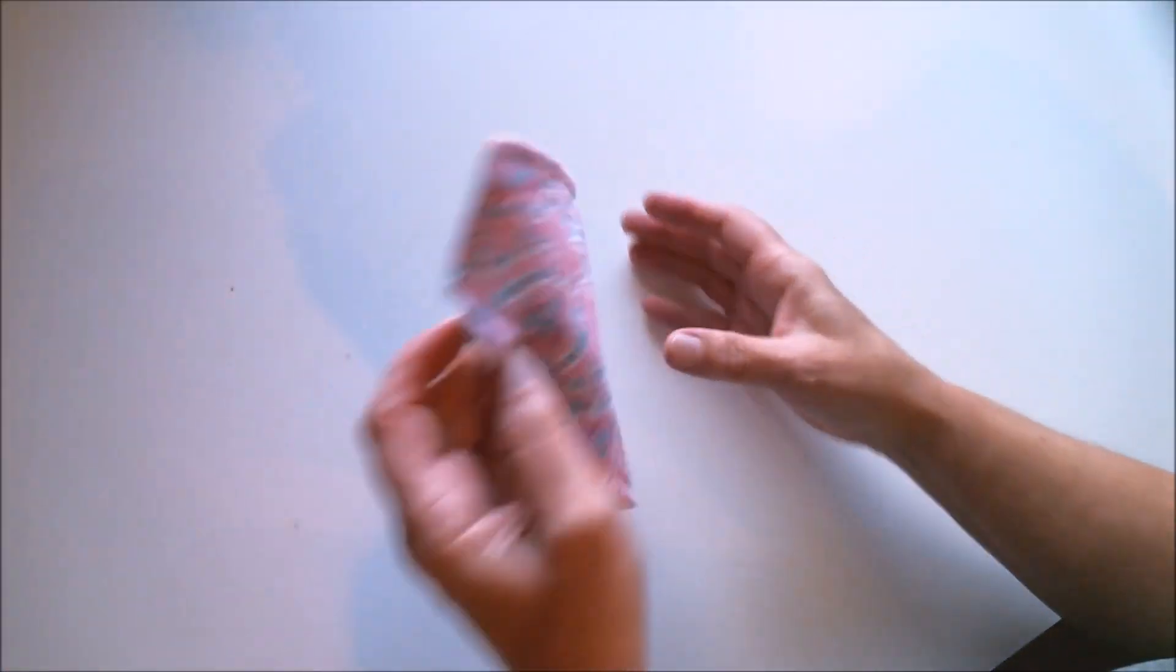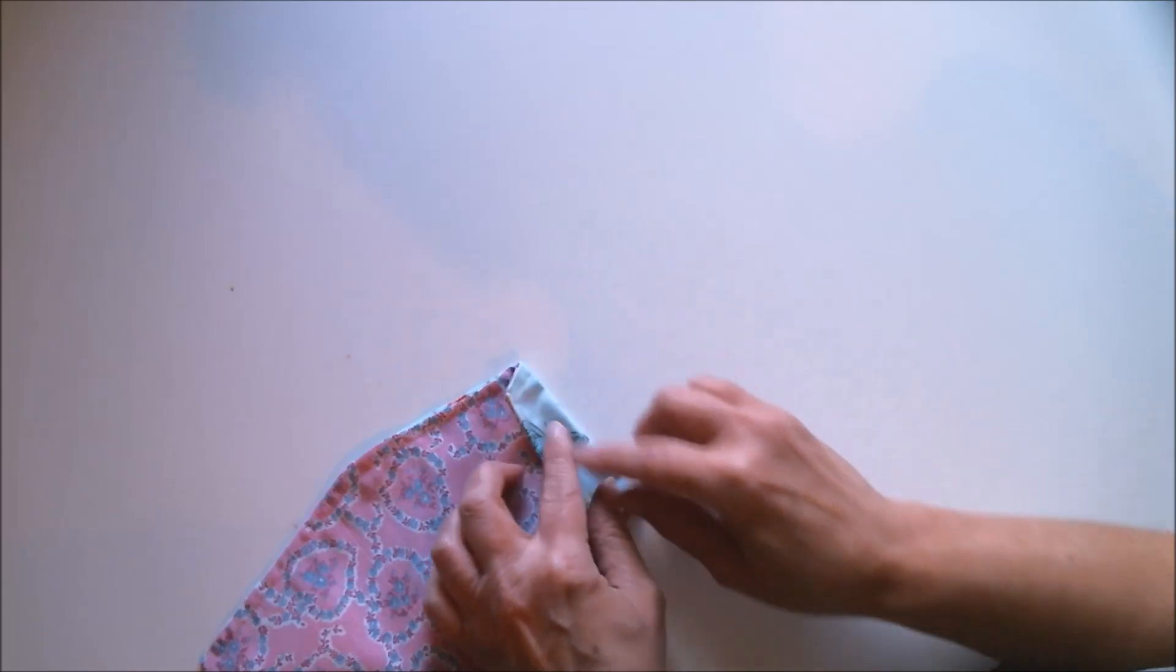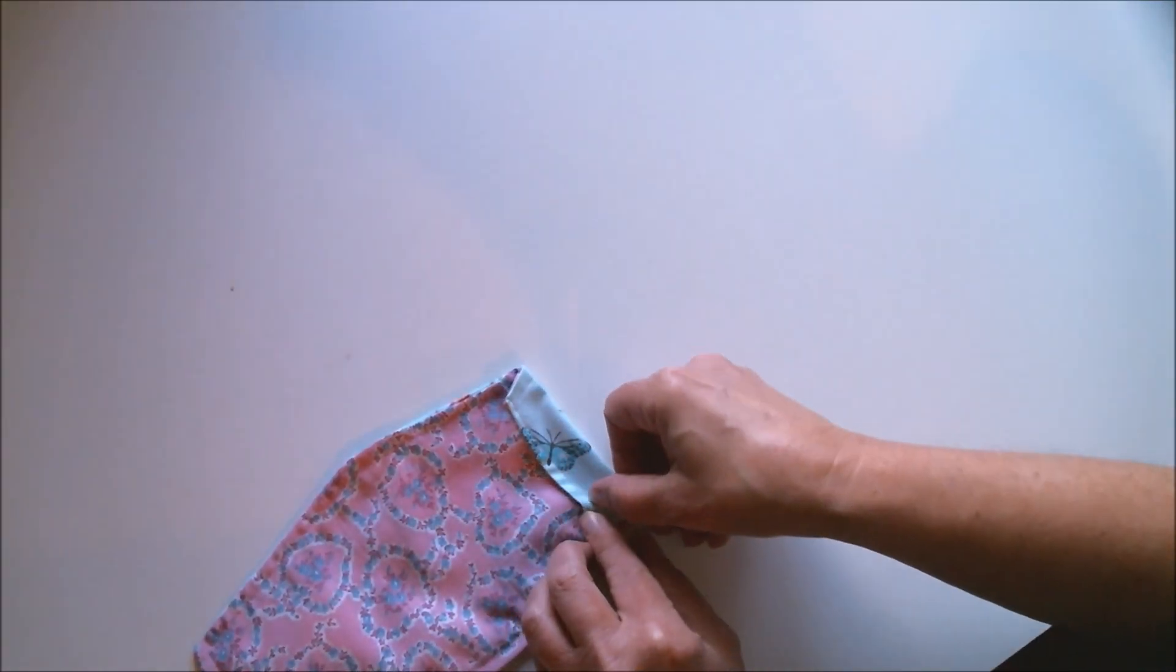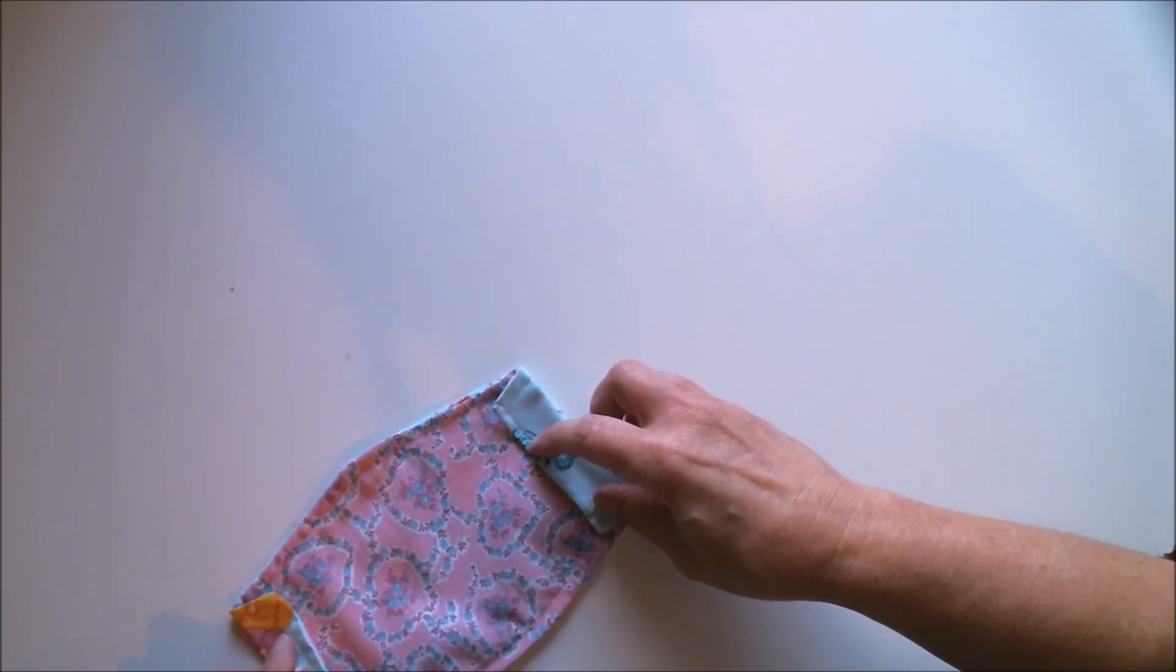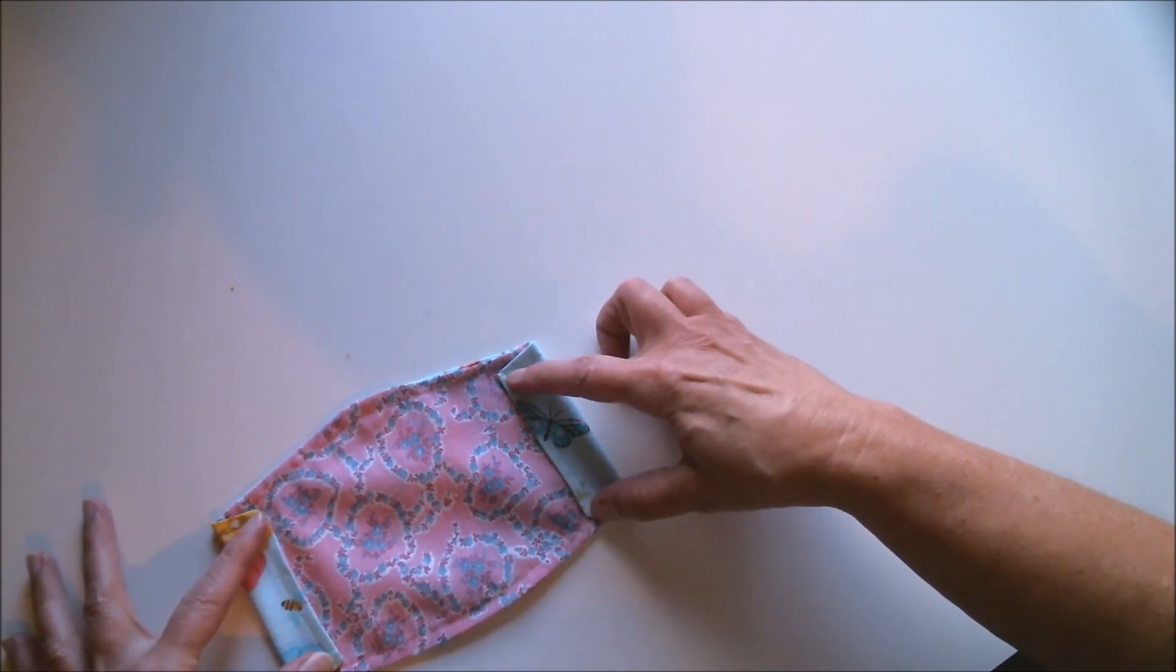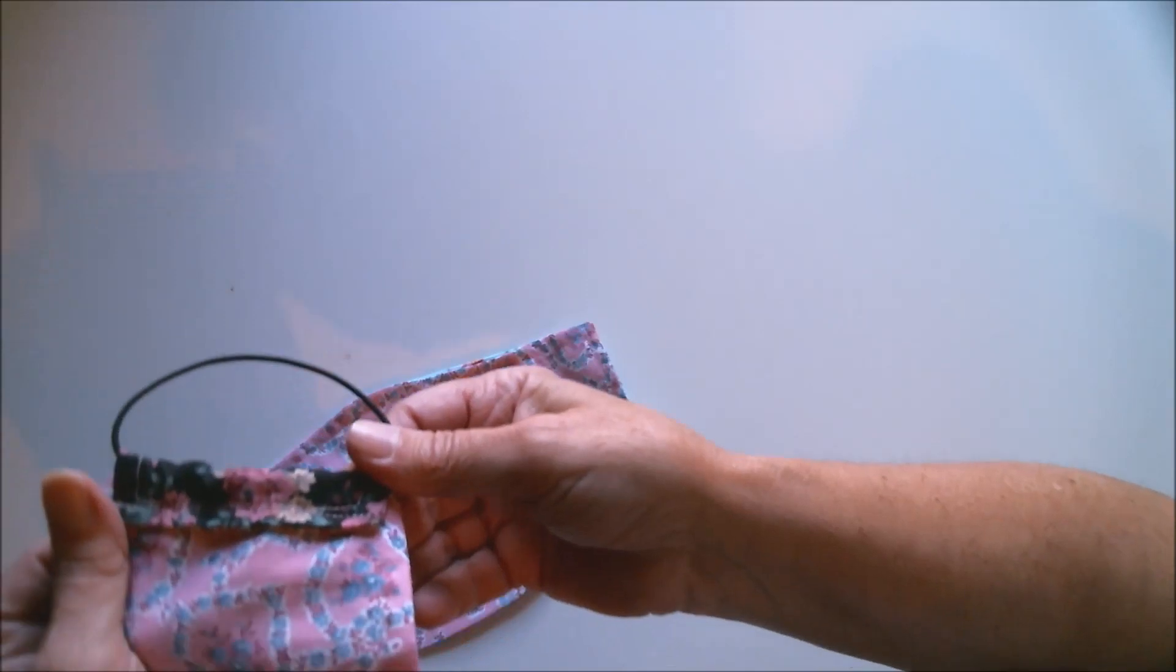Now it's time to start working on what I call the tunnels to put the elastic through. What you're going to do is fold over an end approximately three-fourths of an inch and you're just going to sew right down the same stitching that's already there. Once you do that, it's going to look just like this.